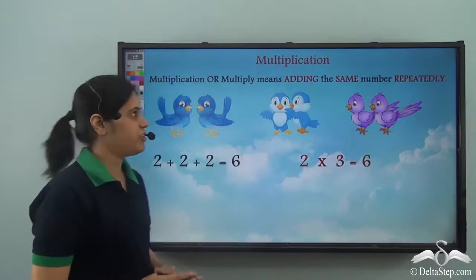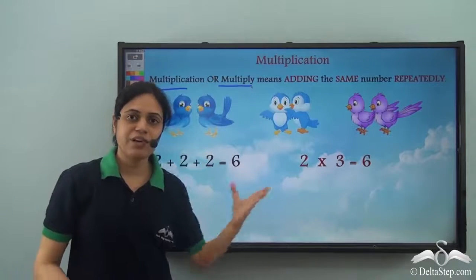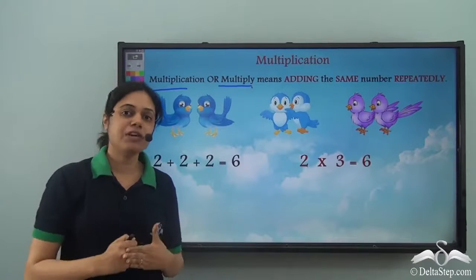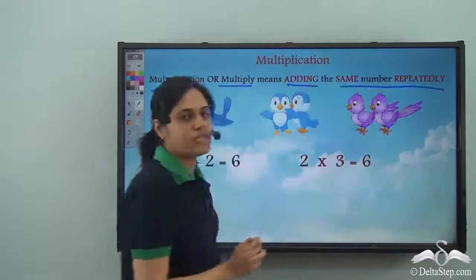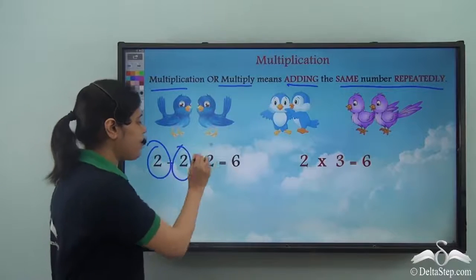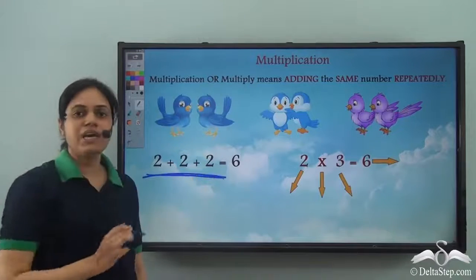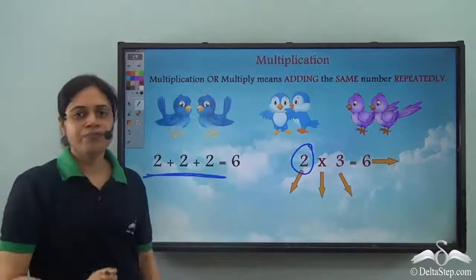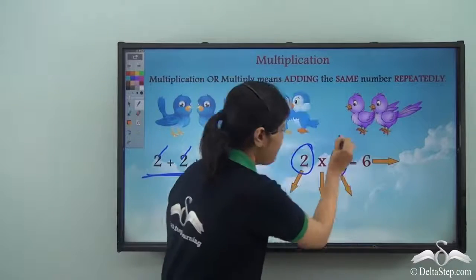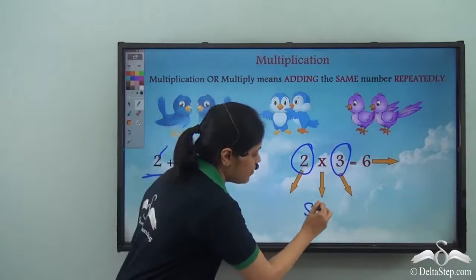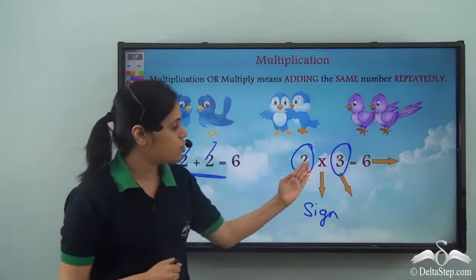So this is what multiplication is. Multiplication means adding the same number repeatedly. So we have the number two being added again and again. How many times is two added? Three times. So I have three here, and this is the multiplication sign. Six is the answer when we multiply two three times. So how do we get the multiplication table of two?